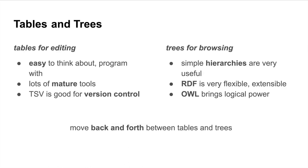I think of these tools in terms of tables and trees. We try and use tables for editing because they're easy to think about and program with. There's lots of mature tools — tab-separated values — and tables are very good for version control. On the other hand, we have trees with simple hierarchies that are very useful for searching and browsing. RDF, which is very extensible. Description Logic bringing logical power. And so I want to make it easy to move back and forth between tables and trees.